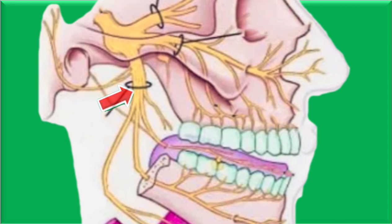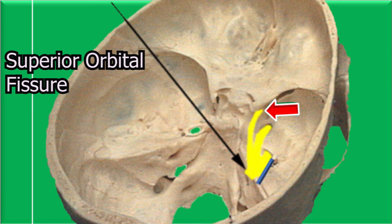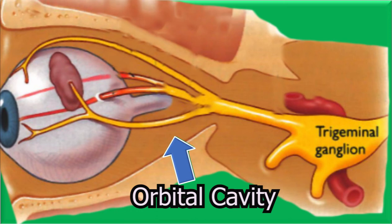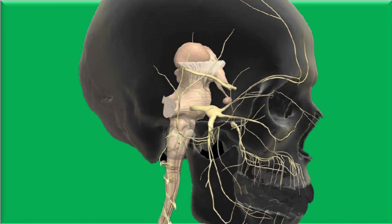Back inside the skull, the ophthalmic division moves anteriorly and exits through the superior orbital fissure, while the maxillary division exits through the foramen rotundum. So, all three divisions exit the skull: the mandibular division to the infratemporal fossa, the ophthalmic division into the orbital cavity, and the maxillary division into the pterygopalatine fossa.